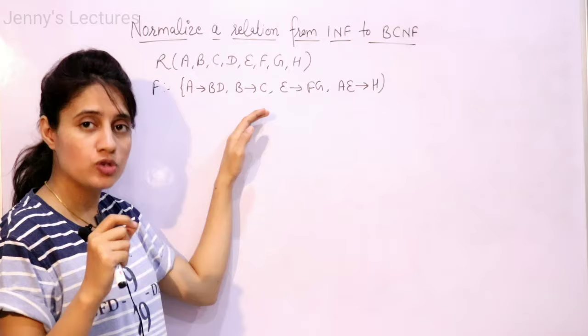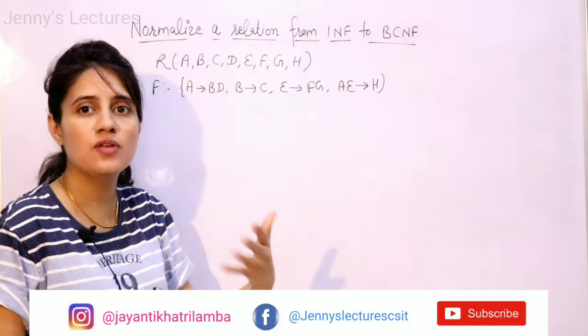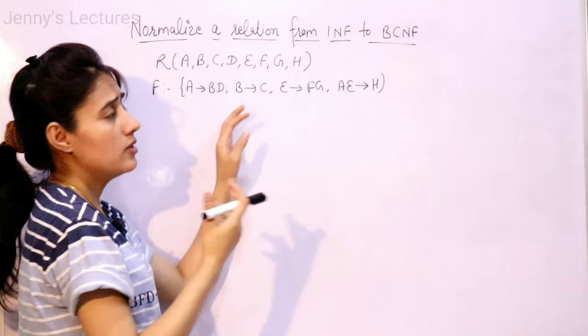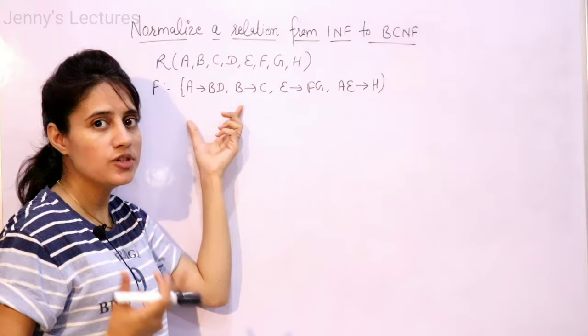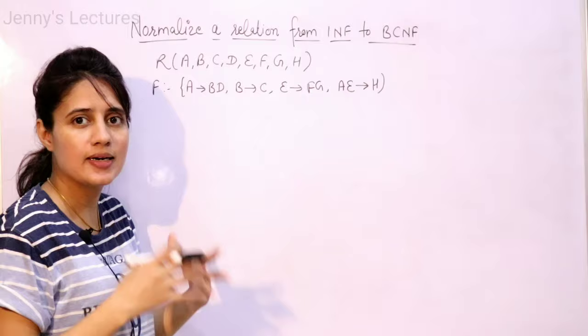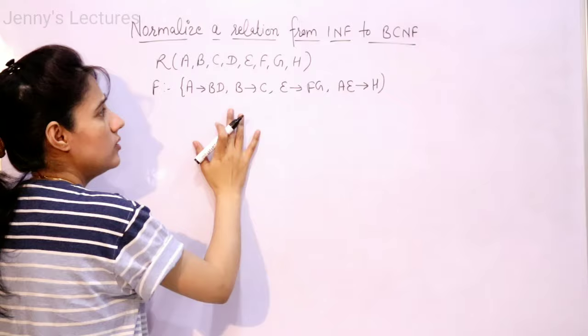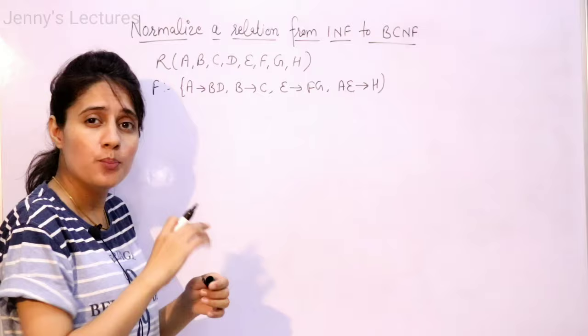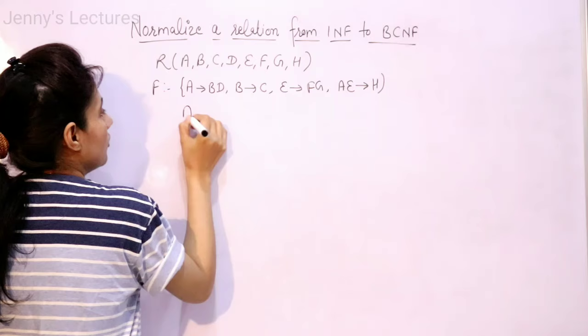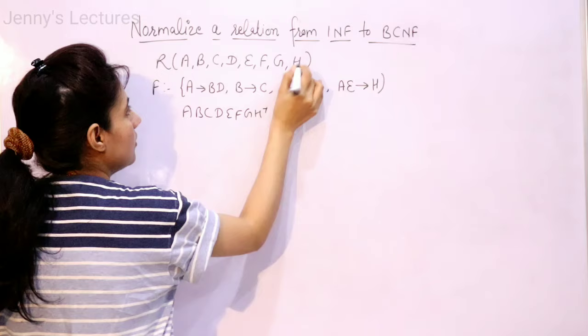To check the normal form, we need to find out the candidate key. We will find out candidate keys first and then check if there is any partial dependency. If there is partial dependency, then this is not in second normal form, and that is why it is in first normal form. By default, the relation written like this is considered to be in first normal form. So now, find out the candidate key. Take all the attributes of the relation and find out the closure.